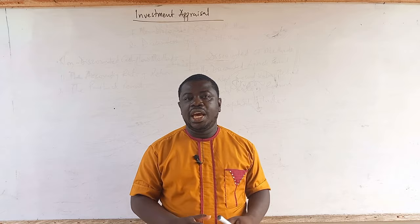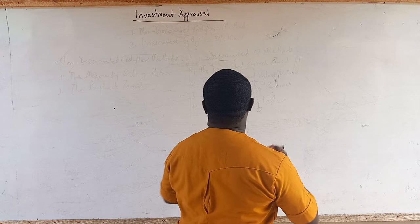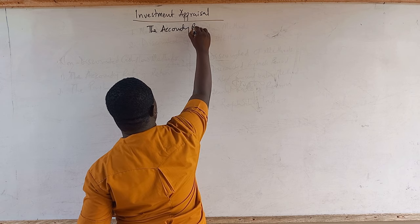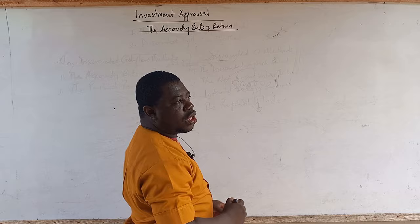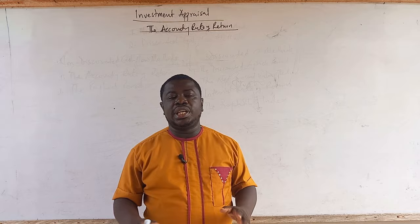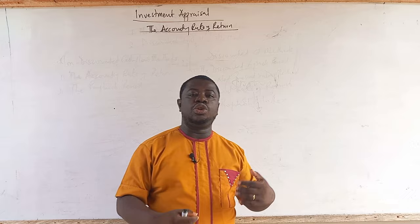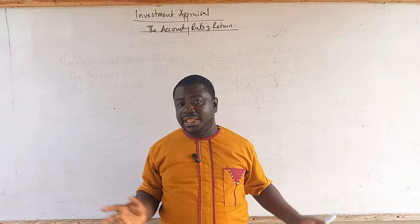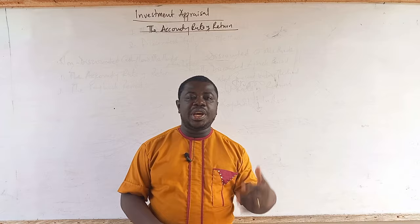We begin with the non-discounted approach, covering the accounting rate of return and the payback period. When we say accounting rate of return, simply put, it's more like an accounting profit that you are using as a measure to determine whether you should embark on a project or not. A capital project is different from a business entity as a whole.